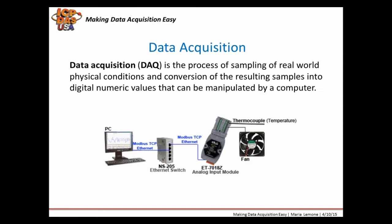Data acquisition, abbreviated DAQ, is the process of sampling real-world physical information and the conversion of the sample data into digital numeric values that can be understood by computers and controllers. This picture shows a data acquisition computer program with a trend graph running on a PC connected to an Ethernet switch, which is connected to an Ethernet-based thermocouple input and digital output module. The program takes the temperature data and triggers a fan to turn on or off through the digital input on the ET7018Z module based on the temperature determined by the thermocouple sensor.